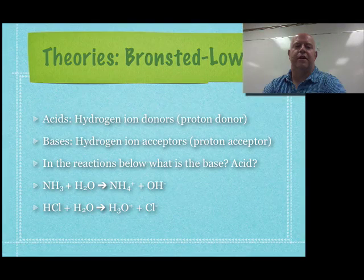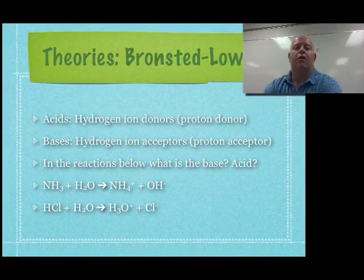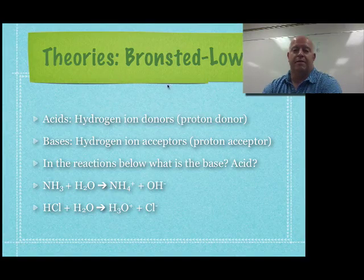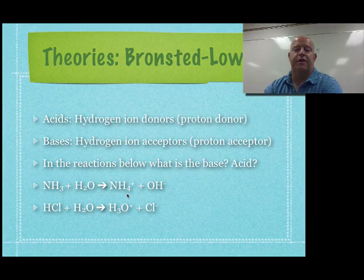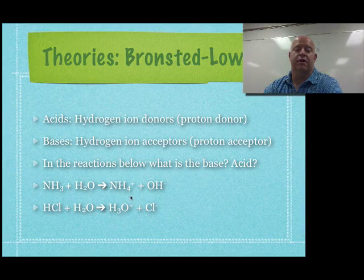In this video segment, we're going to take the Brønsted-Lowry theory one step further and talk about how, if you look at both sides of the reaction — the forward reaction and the reverse reaction — what goes on in both directions. We wrapped up last time with the theory: acids are hydrogen ion donors, bases are hydrogen ion acceptors. The next step is what happens if you reverse the reaction, such as NH4+ and OH- going in reverse?